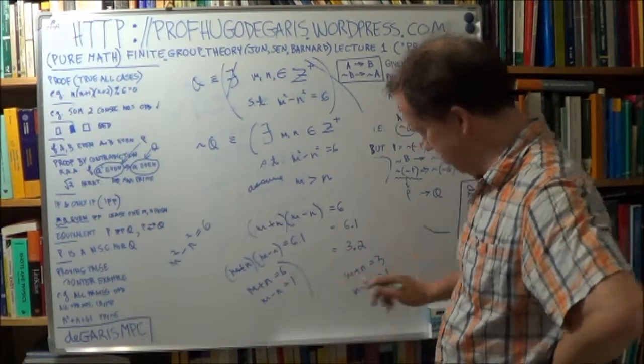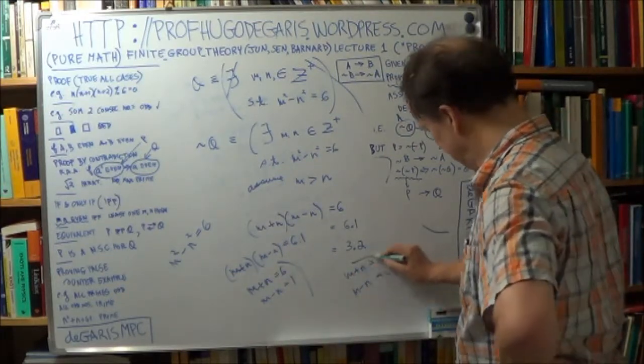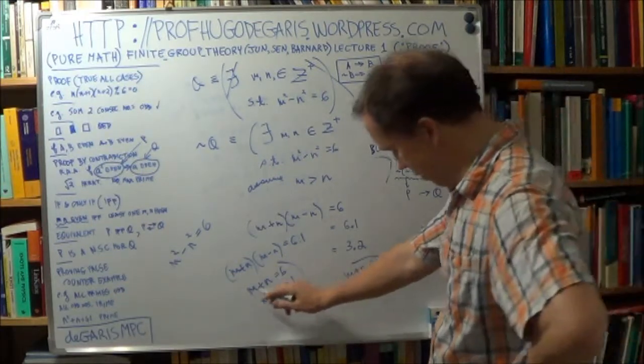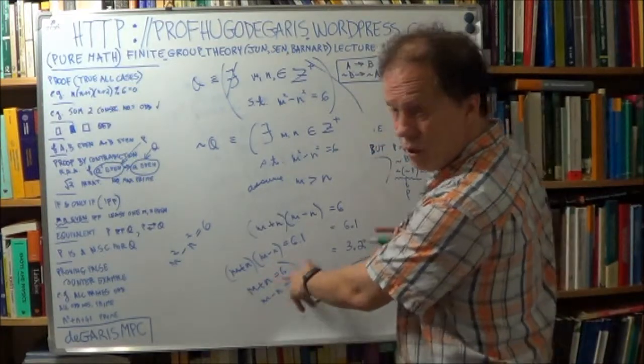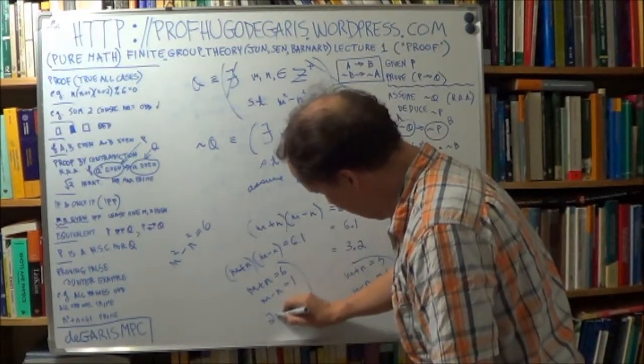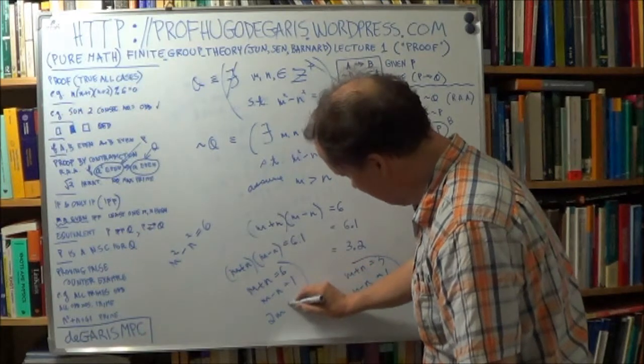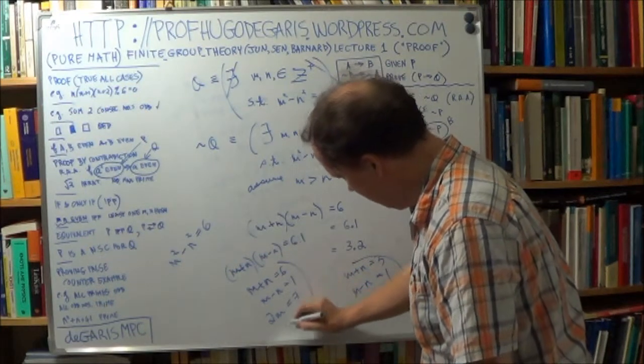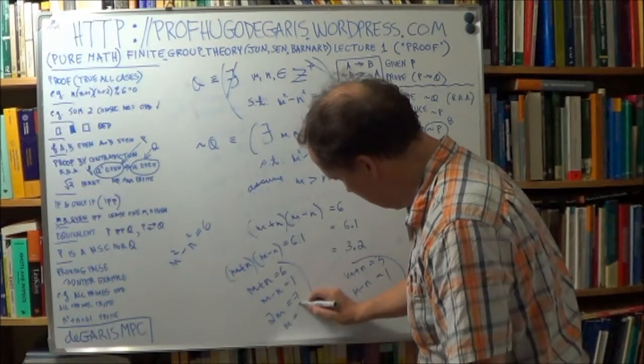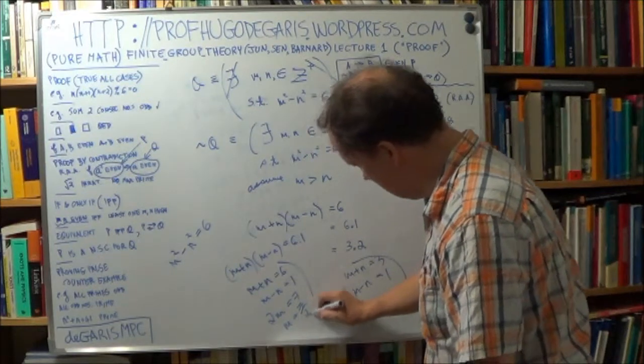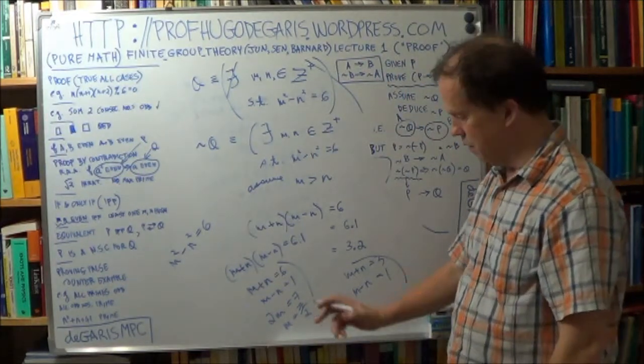Now so either that's true or this is true. Add these two lines, so you get 2m, the n's cancel, and you get 7. So that means m is 7 over 2. Well, that's not an integer, so that's false.